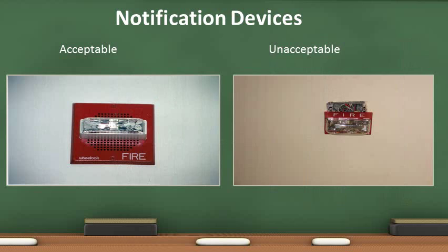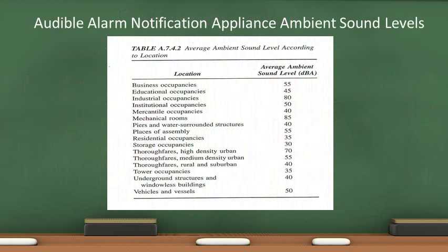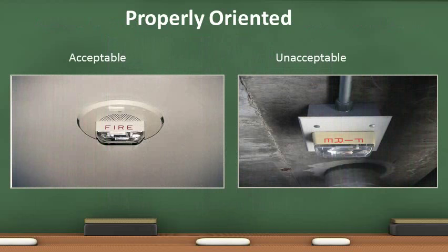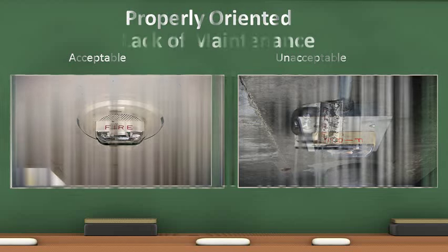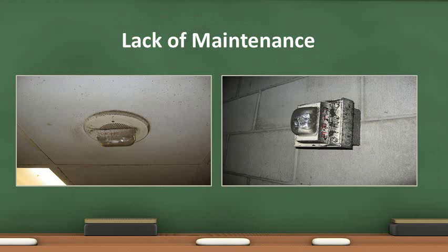A visual inspection is conducted of all the notification devices. The appliance on the left is acceptable because there are no signs of physical damage. The one on the right is detached from the wall and needs to be repaired or replaced. Once the repairs are made, they need to be tested to ensure functionality. Audible alarm system appliances shall provide a sound pressure of 15 decibels above the ambient surrounding sound. Complaints regarding inability to hear the fire alarm require an inspection and test by a licensed fire alarm maintenance company. The appliances must be oriented properly, and notification devices must be properly cleaned to maximize functionality.